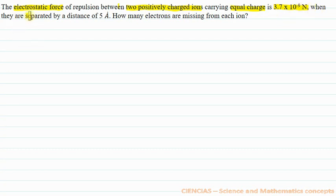When they are separated by a distance of 5 Angstrom, how many electrons are missing from each ion?